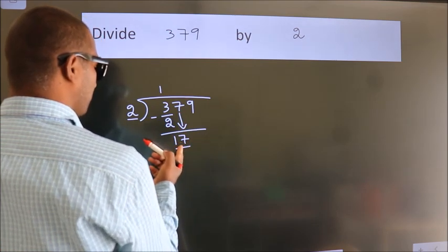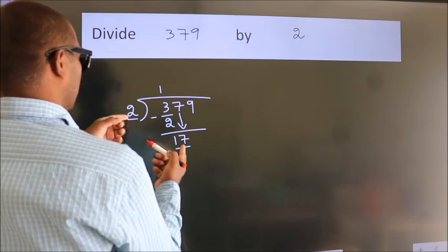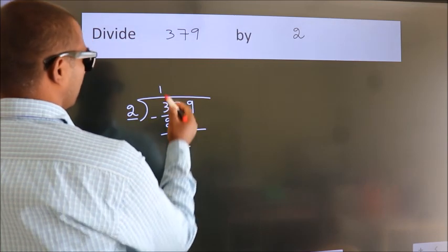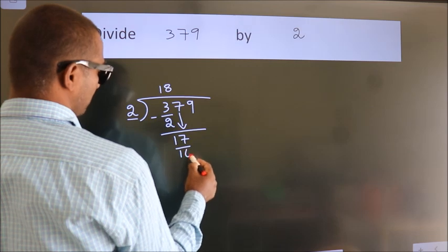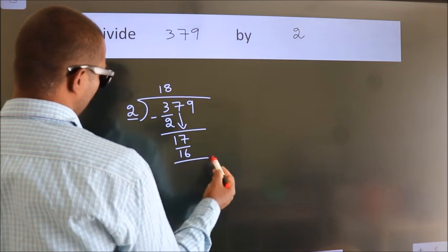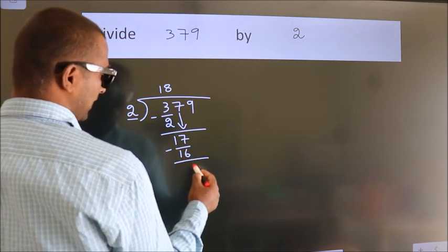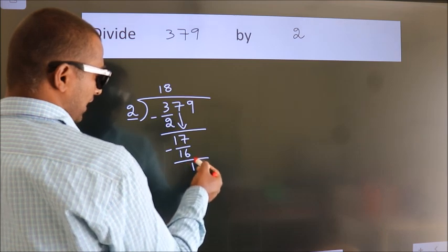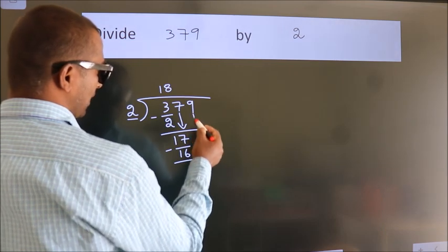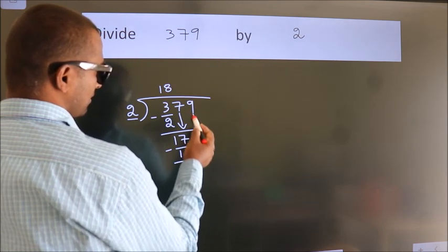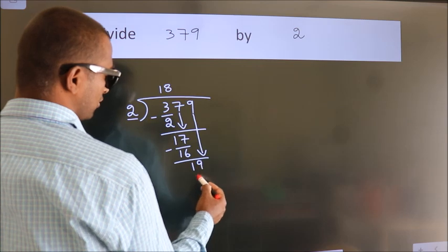A number close to 17 in the 2 times table is 2 eights, which is 16. Now we subtract, we get 1. After this, bring down the beside number, so 9 comes down, giving us 19.